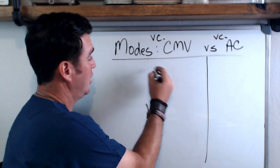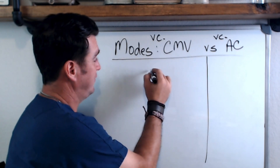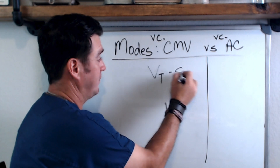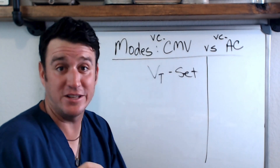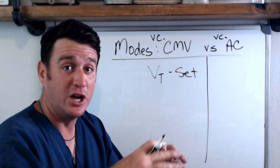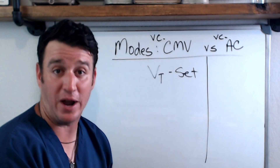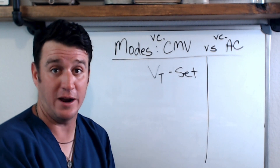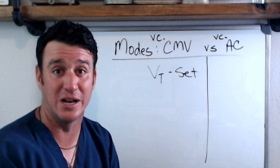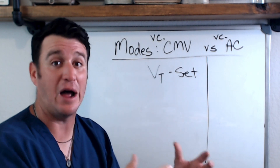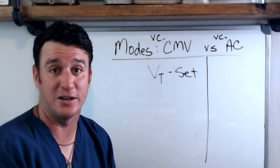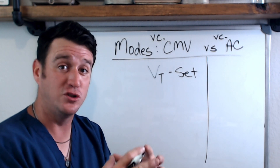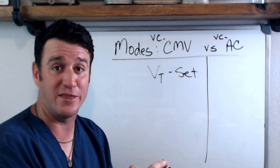So what do we set in volume control CMV? We're going to set a tidal volume — we tell the ventilator how big to make each breath. We'll set 450 milliliters, 500 milliliters, 400 milliliters, whatever it is. That tidal volume is going to be controlled by the ventilator.